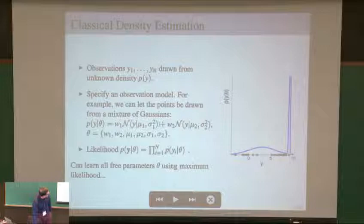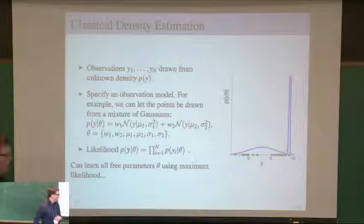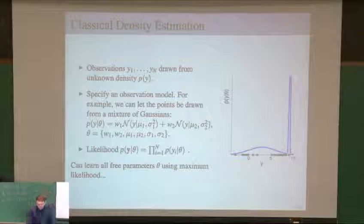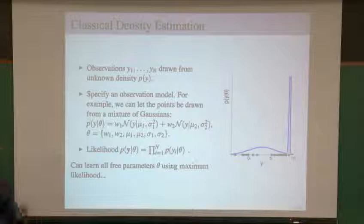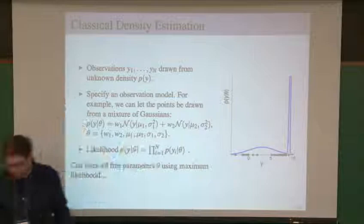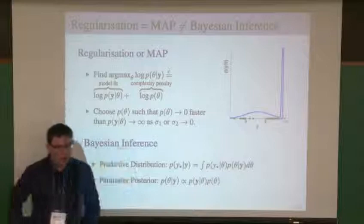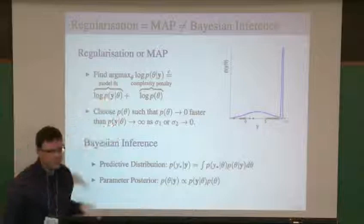We can do that by forming a likelihood from our observation model and, for instance, maximizing that likelihood with respect to these parameters. Sometimes this can lead to undesirable results — for example, if we have a mixture of two Gaussians, one Gaussian can give mass to all of the points and the other is free to collapse its mass onto one point to achieve infinite likelihood, but not a generalizable density estimate. We wouldn't actually believe that our data were generated by point masses.